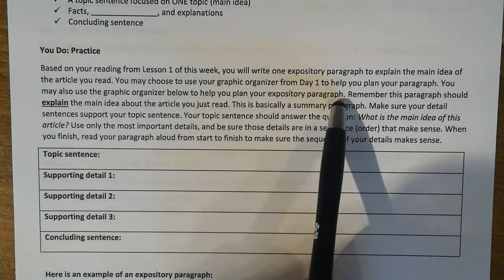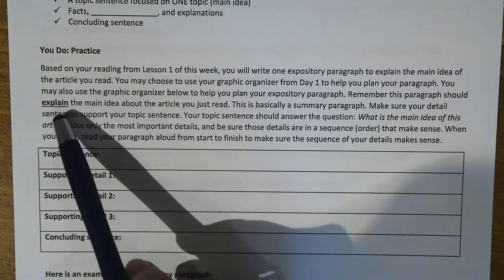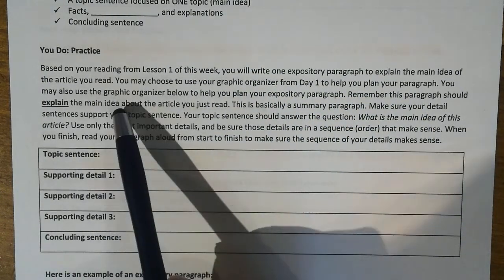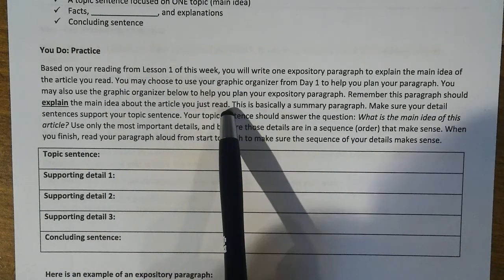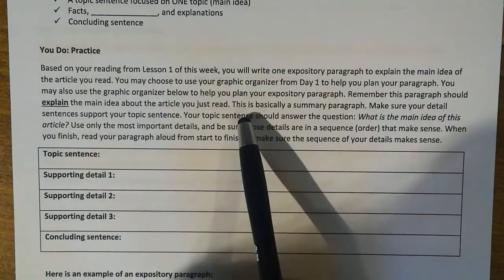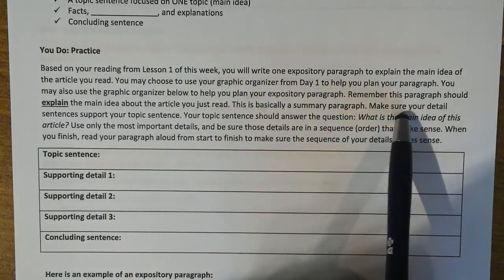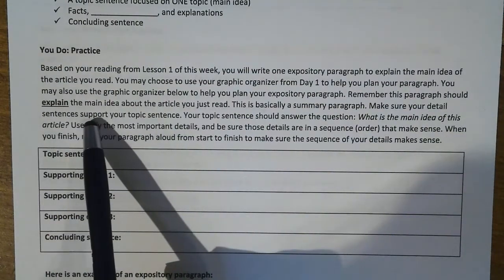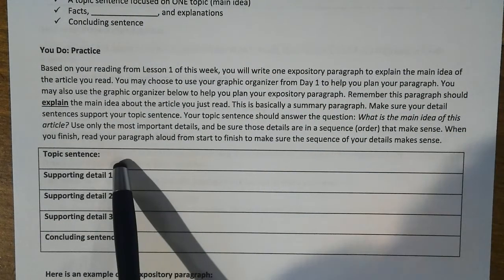Remember, your paragraph should be explaining what the main idea of the article was. It's basically a summary paragraph. Make sure your detailed sentences support your topic sentence. Your topic sentence is: 'This article was about...'